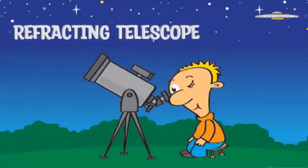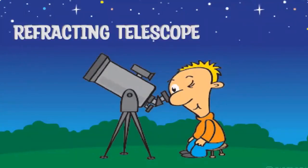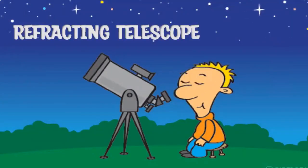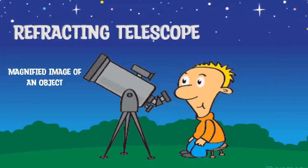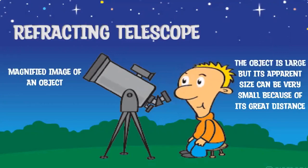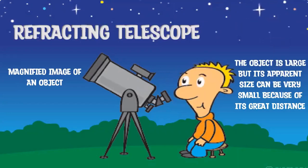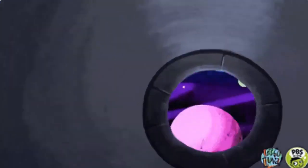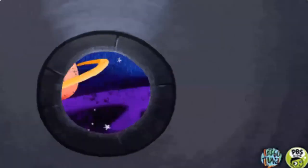A refracting telescope is similar in many ways to a microscope. Both optical instruments use two converging lenses to produce a magnified image of an object. In the case of a microscope, the object is small and close at hand. However, in the case of a telescope, the object is large but its apparent size can be very small because of its great distance. The major difference between these instruments is that the telescope must deal with an object that is essentially infinitely far away.